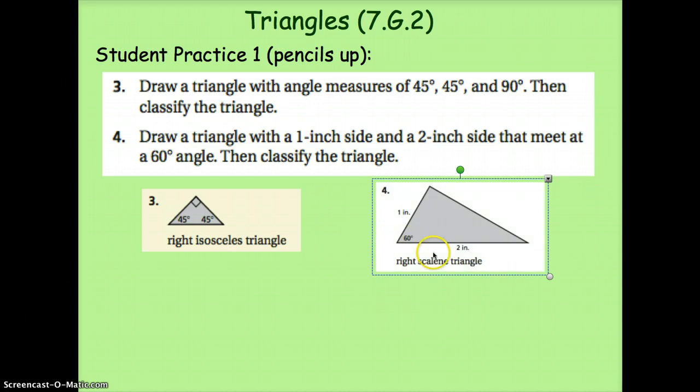Okay, our second triangle should look something like this. It is a right scalene triangle. As you can see, this angle here is 90 degrees when you measured it with your protractor. This angle here will be 30, and this one is 60.